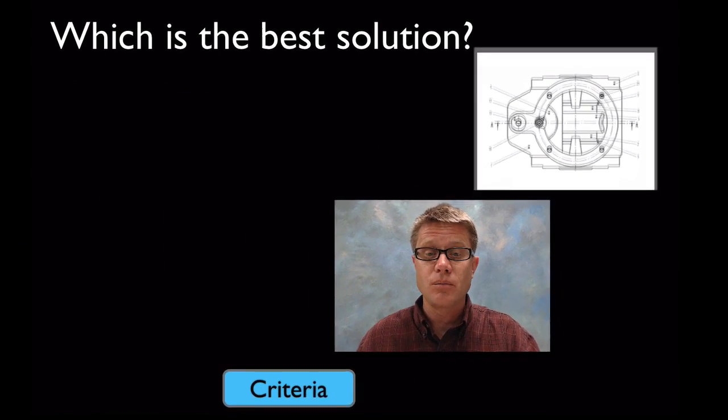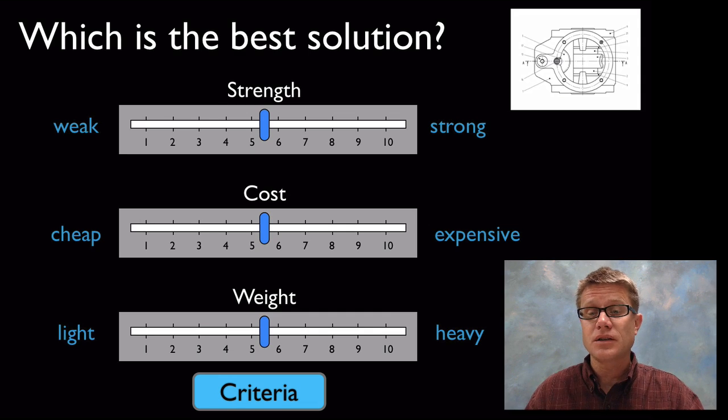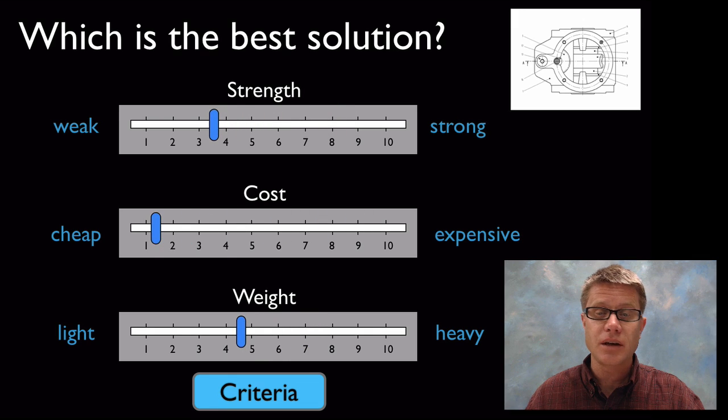A good way to think about that is to think of these as sliders. We could look at the strength from very weak to very strong, the cost from very cheap to very expensive, and the weight from very light to very heavy. If I move strong over, that's going to make it more expensive and heavier. If I want to make it really cheap, I could move that cost slider all the way down, but that's going to make a product that's less strong and slightly lighter.